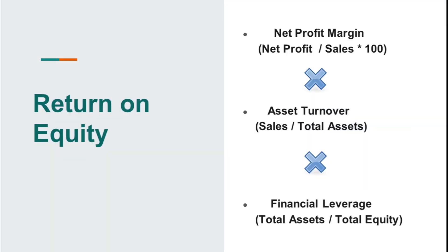Return on equity can be divided into three components: net profit margin, multiplied by asset turnover and financial leverage. Net profit margin has the formula: net profit divided by sales into 100. Asset turnover is sales divided by total assets, and financial leverage is total assets divided by total equity. You can also simply calculate return on equity as net profit divided by total equity, but in DuPont Analysis we analyze all three components separately.